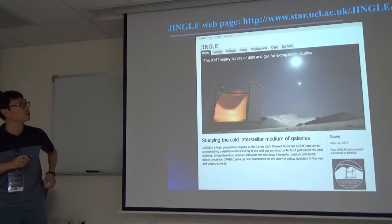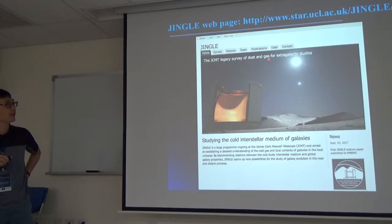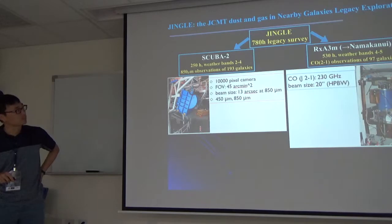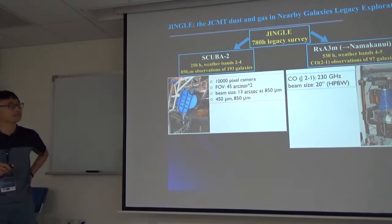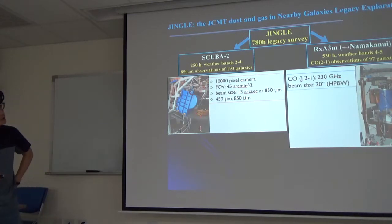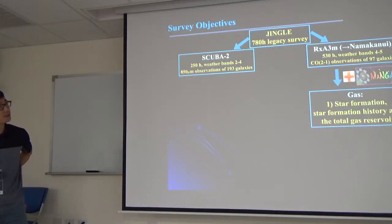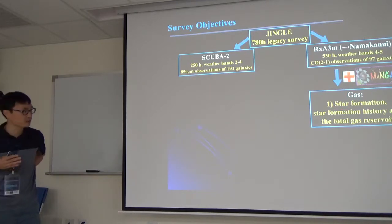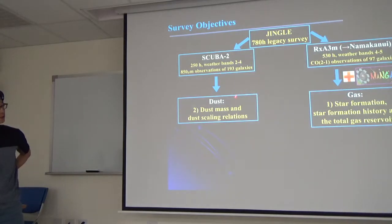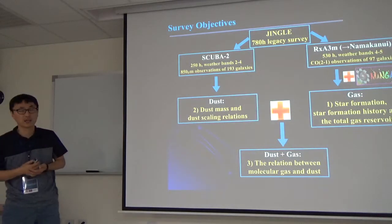Which means we must improve our understanding of the properties of cold ISM across the entire galaxy population. That's why we have been doing a survey which is called JINGLE. JINGLE is a large survey program with JCMT, JCMT Legacy Survey of Dust and Gas for Galaxy Evolution Studies. JINGLE has roughly 800 hours of survey time. There are two types of observations: one is for the dust continuum observation with SCUBA-2, and the other one is the CO observation with RxA. Now the detector was changed to NAMAKANUI.